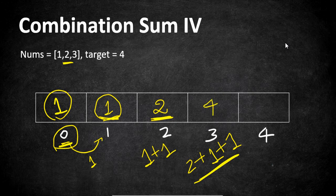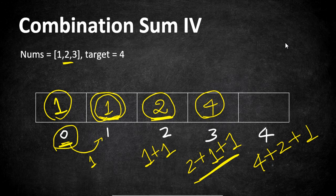Finally, for target 4: with value 1, the rest needed is 3 — at position 3 we have 4 combinations. With value 2, the rest needed is 2 — at position 2 we have 2 combinations. With value 3, the rest needed is 1 — at position 1 we have 1 combination. So overall we have 7 combinations for target 4, which is our output. We return the value at the last cell of our DP array.